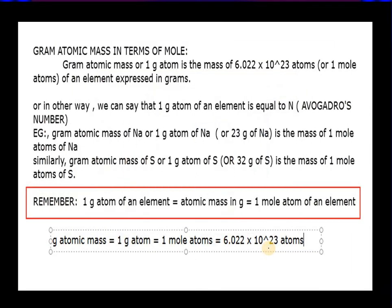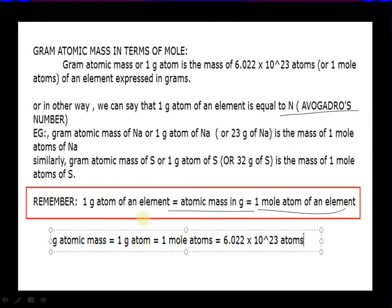Now we move to the next topic: gram atomic mass in terms of mole. One gram atom is the mass of Avogadro's number of atoms, and one mole of atoms of an element expressed in grams. So one gram atom of an element is equal to Avogadro's number of atoms, which equals the atomic mass in grams, which equals one mole of atoms. In summary: one gram atomic mass = one gram atom = one mole atom = Avogadro's number of atoms.